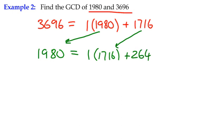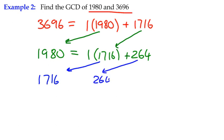The remainder is still not zero, so we apply the algorithm again. 1,716 moves to the dividend position and 264 becomes the new divisor. We're dividing 1,716 by 264, which goes in six times with a remainder of 132.